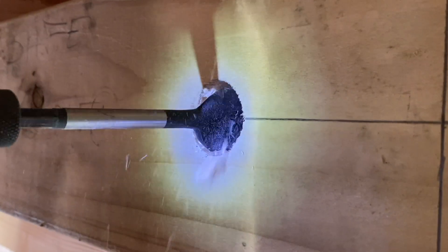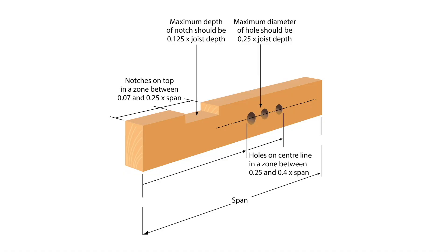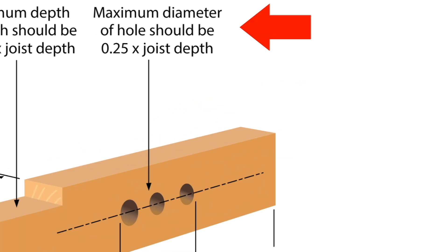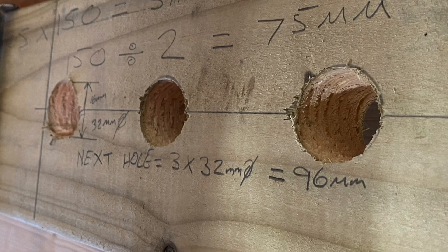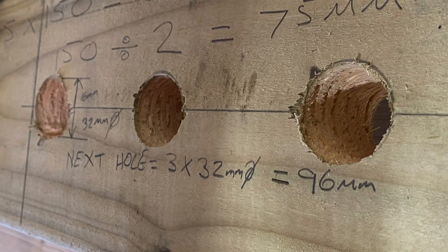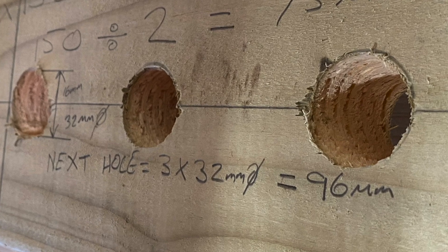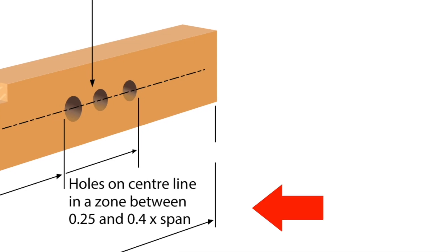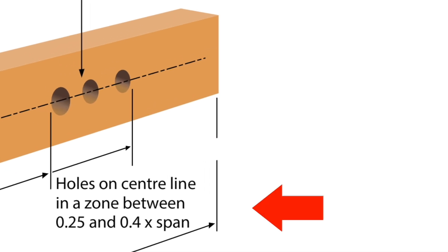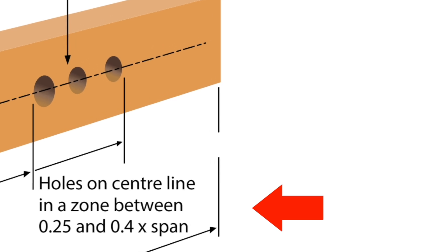According to paragraph 10.1.1 of the Electrician's Guide to the Building Regulations, holes are permitted to be drilled in solid joists providing that they are: a. no greater diameter than 0.25 times the depth of the joist; b. drilled at the neutral axis; c. not less than three diameters centre to centre apart; and finally d. located between 0.25 and 0.4 times the span from the support.